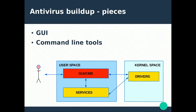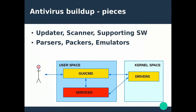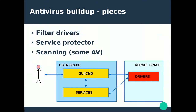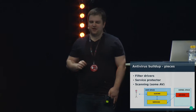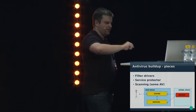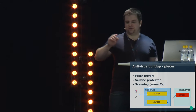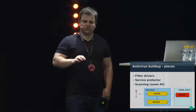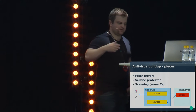A little bit more about the pieces. The graphical user interface and command line tools are the stuff that is visual and usable by the user. The services contain updaters, scanners, and supporting software like parsers, unpackers, and emulators. And kernel-space filter drivers — for example for file systems — and service protectors that protect the antivirus services so they can't be killed. Some antiviruses also contain some scanning functionality in the kernel side. This is still a simplification; we could talk for days about how different antiviruses are built.